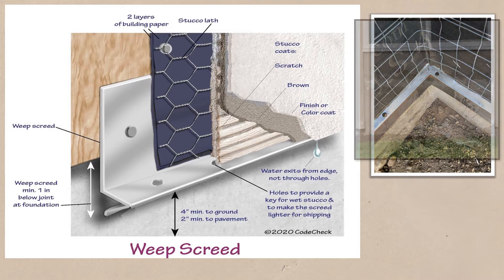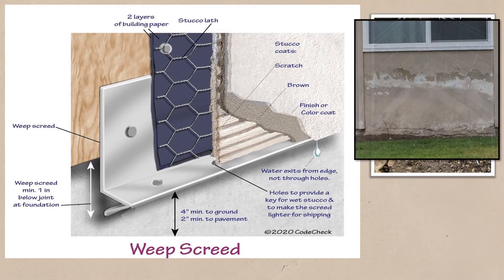When water was applied over framing and then allowed to extend to the earth, occasionally through capillary action, water would wick up through the plaster. If the ground was laden with salts, it could become a problem. The weep screed quickly and inexpensively solved this occasional issue.